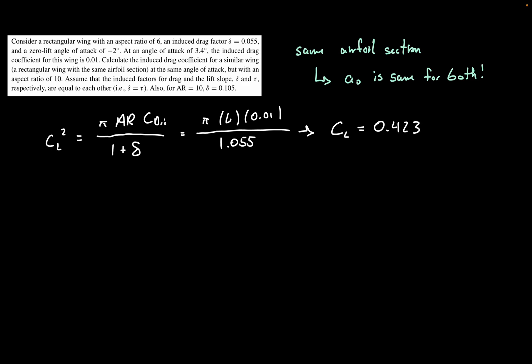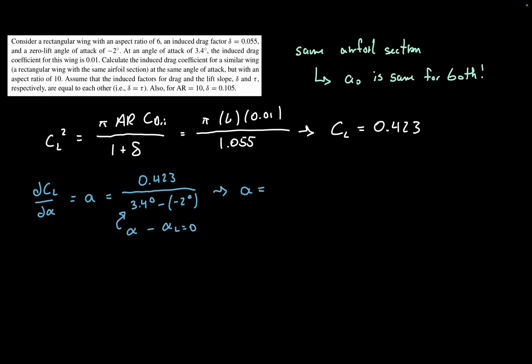The next step is to calculate the lift slope of the wing, defined as dCL/d-alpha, which equals A. With dCL equal to 0.423 and d-alpha equal to the current angle of attack minus the zero-lift angle of attack — 3.4 degrees minus negative 2 degrees — we get a lift slope A of 0.078 per degree, which converts to 4.485 per radian.